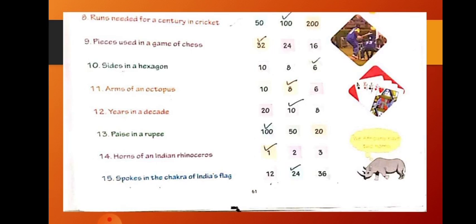Now, runs needed for a century in cricket. 50, 100, 200. And the correct option is 100.